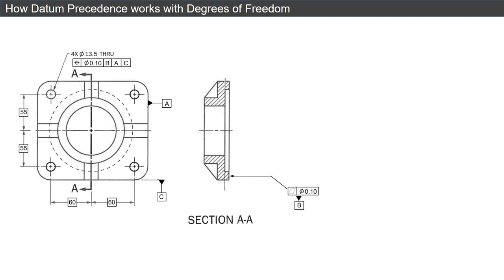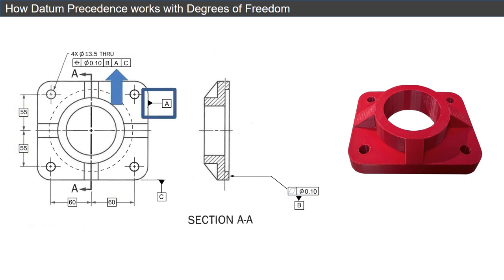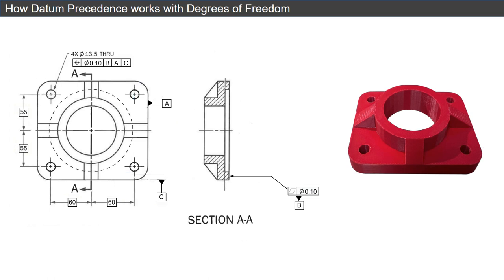Following datum precedents to establish a datum reference frame constrains the degrees of freedom of a part, meaning that it limits the ways in which the part can move or be positioned relative to its intended function. The datums with the highest precedence must be held in a fixed position and orientation first. Datums with lower precedence constrain the remaining degrees of freedom. The degrees of freedom able to be constrained by any datum depends on the type of datum. It's important to follow the datum precedence when inspecting a part feature or characteristic to ensure the part will function correctly and meet its intended design requirements.